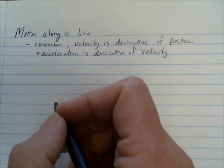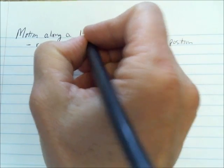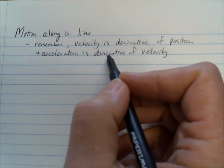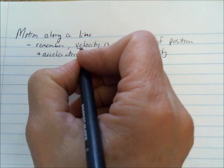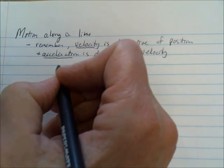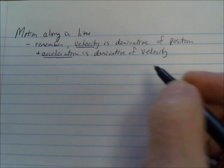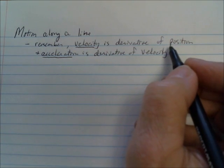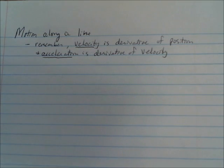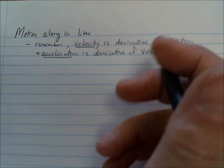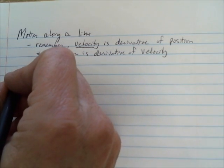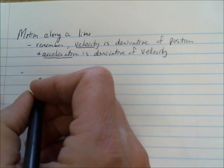Today we're going to be talking about motion along a line. Motion along a line has to do with the velocity of a function and the acceleration of a function, and that function is the position function. We're going to be given a position function in terms of t, and we're going to be asked to describe the motion along that line. Here's how a typical question about motion will go.